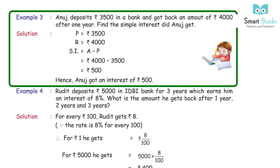Example 3: Anuj deposits Rs 3,500 in a bank and got back an amount of Rs 4,000 after 1 year. Find the simple interest that Anuj got. Solution: P = Rs 3,500, A = Rs 4,000. SI = A − P = 4,000 − 3,500 = Rs 500. Hence, Anuj got an interest of Rs 500.